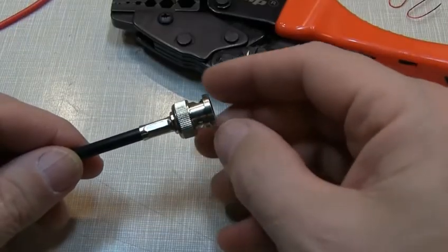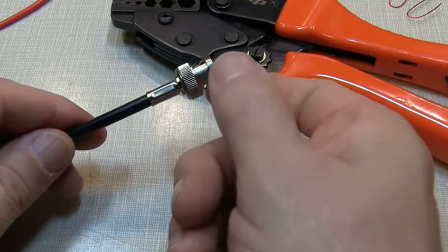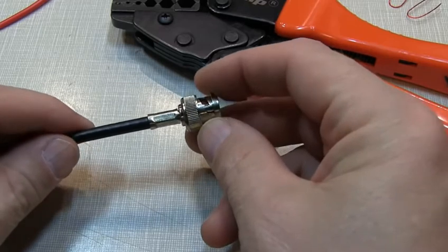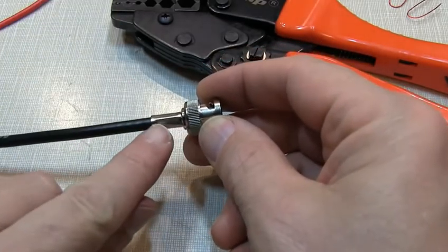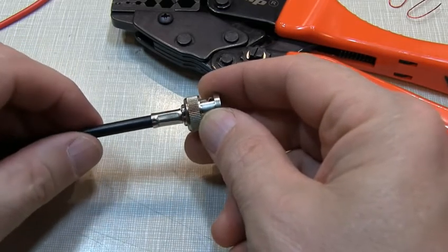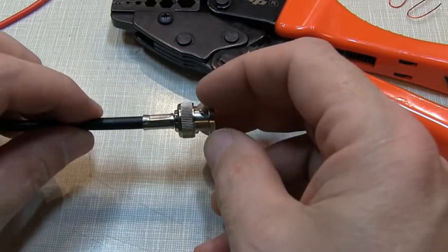Now there is an optional step that we could have taken when installing this connector. Before doing the final crimp, we could have slipped on a piece of heat shrink tubing, and then after making the final assembly here, bring the heat shrink tubing up and shrink it across the ferrule and onto the coax. That makes for a really nice, neat, professional appearance, and it also serves as a little bit of a strain relief.